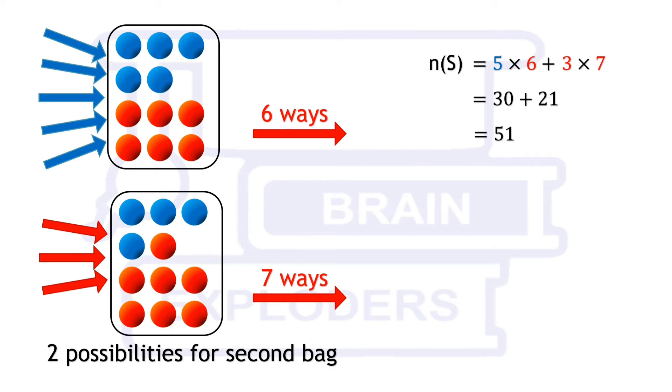We have to find the probability for the second possibility of this bag because it is obtained by transferring a red ball. Number of elements in the set of favorable events is 3 times 7 that is 21. So probability is 21 over 51 or 7 over 17.